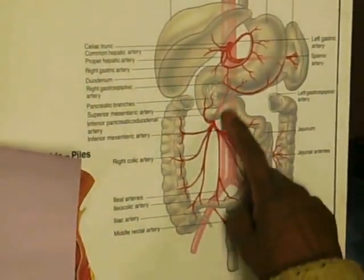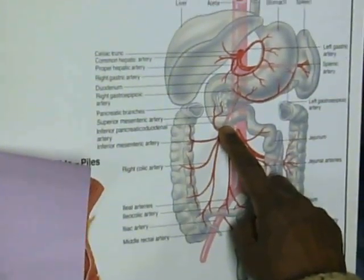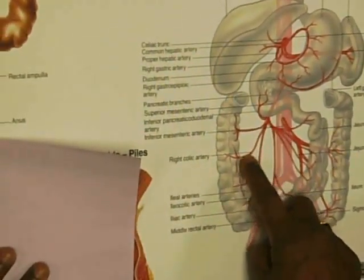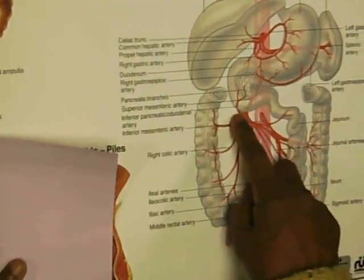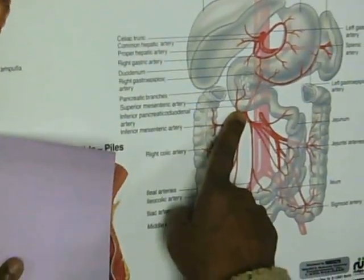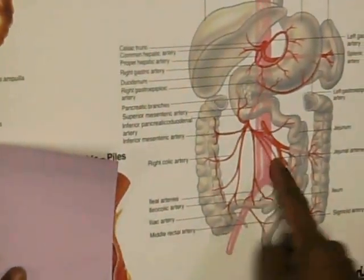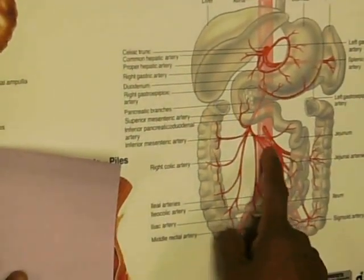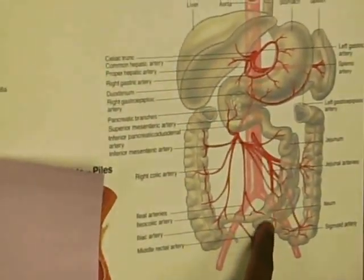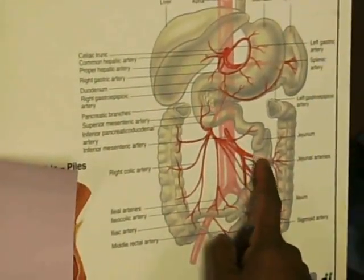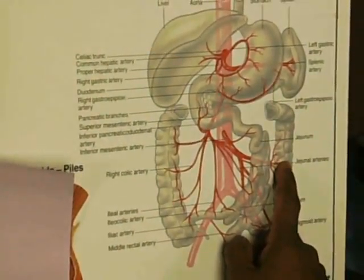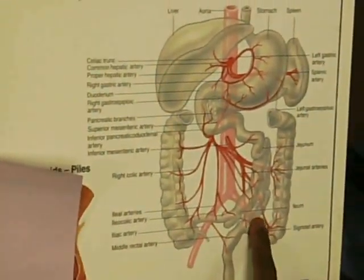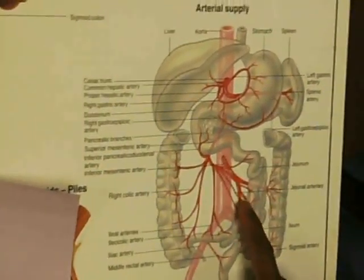The one going to the pancreas and duodenum is called the inferior pancreaticoduodenal artery. Running down there is the ileocolic artery, and this is the right colic. The superior mesenteric is this trunk, this is ileocolic, this one is right colic.